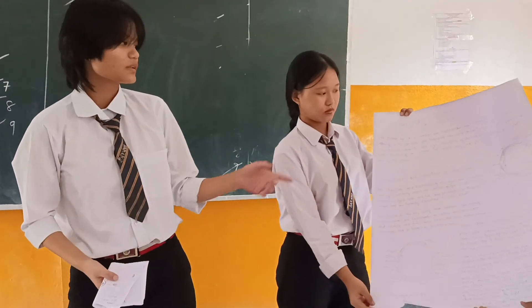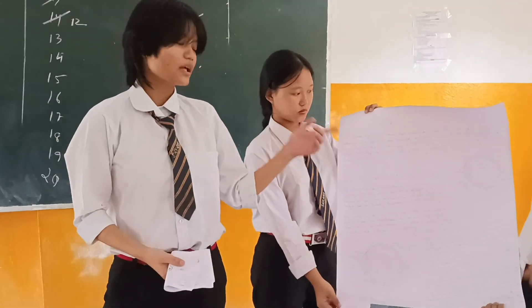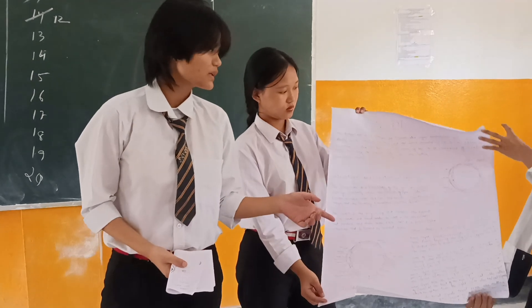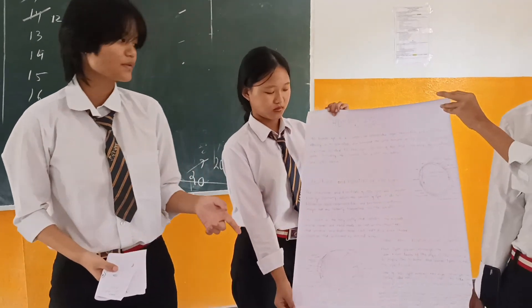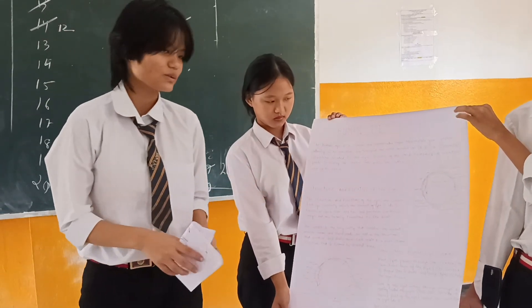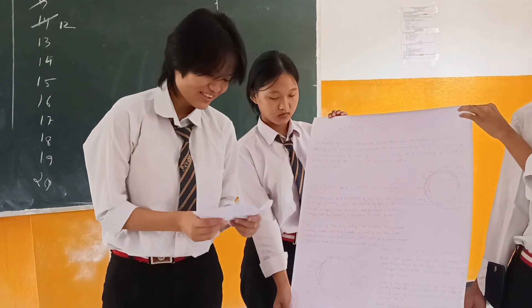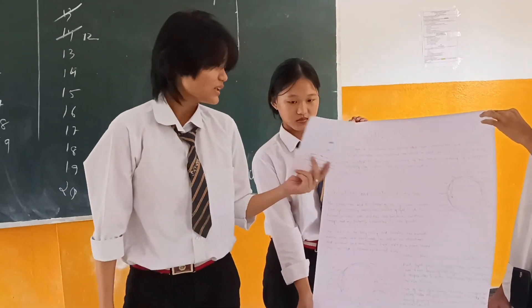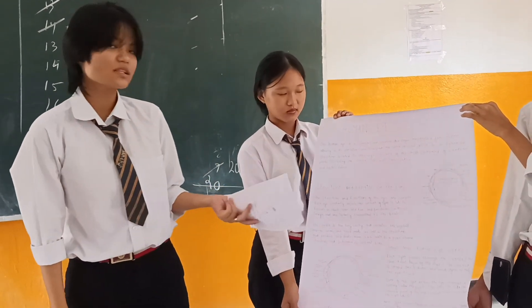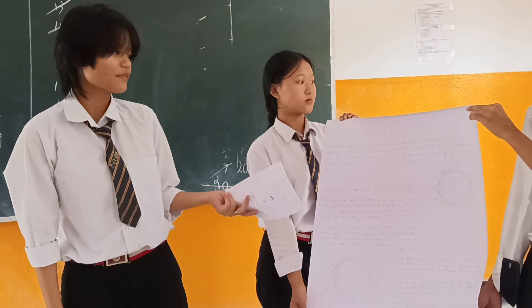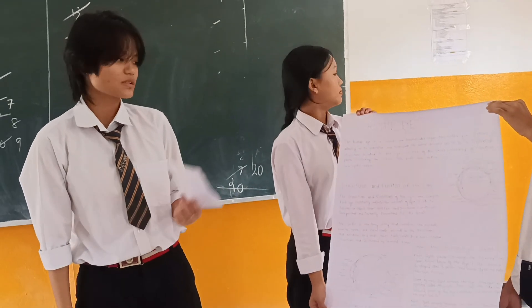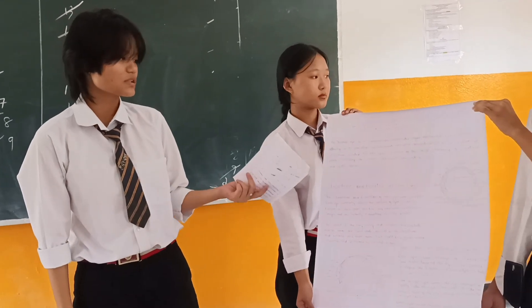Now let's talk about the inner layer of the eye. Behind the cornea there is a dark muscular structure called the iris. The iris determines the color of the eye. For example, if a person has blue eyes, the color of the iris is blue.